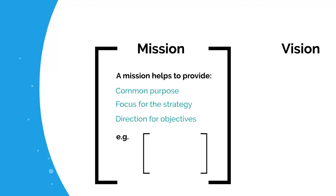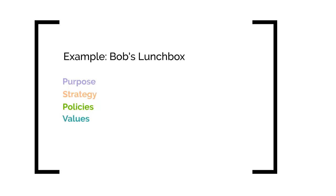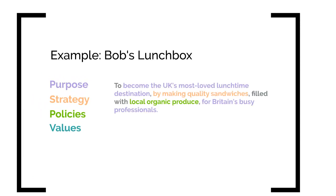Let's see how that might work out in practice with an example. Bob's Lunchbox is a sandwich shop and its mission is going to be set against Campbell's four key elements of good mission statements. These are: Purpose — why does the organization exist and for whom? Strategy — how is the organization going to compete? Policies — the rules people are expected to follow to get them to that place. And Values — what the organization stands for, such as quality or value for money.